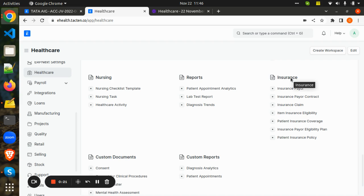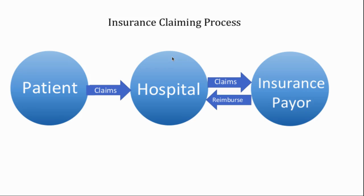Now let us see the end-to-end workflow of insurance in ERPNext. In the insurance claiming process, the patient comes to the hospital, the hospital takes the reference of the patient insurance policy and bills the insurance company. The insurance company refers to the patient insurance policy, accepts the claim from the hospital, and reimburses the amount to the hospital. Let us see this process in ERPNext.